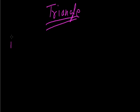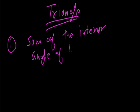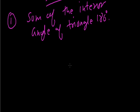Now the first and most important property of the triangle is that the sum of the interior angles of a triangle is 180 degrees. That is, triangles ke sabhi interior angles ka sum 180 degree hota hai. We have to prove this — the sum of the interior angles of the triangle is 180 degrees.